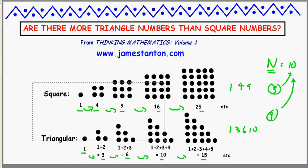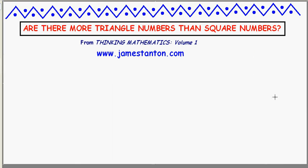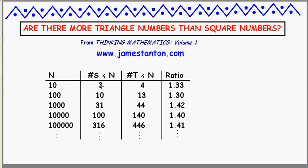In fact, let me show you a little table I made. I did this for 10 and 100 and all sorts of numbers. For the numbers up to 10, I counted 3 square numbers and 4 triangle numbers less than or equal to 10 — a ratio of 4 to 3, which is 1.33. If I go to 100, it turns out there are 10 square numbers and 13 triangle numbers, ratio of 1.30. Up to 1000, there are 31 square numbers compared to 44 triangle numbers — more triangles — ratio of 1.42.